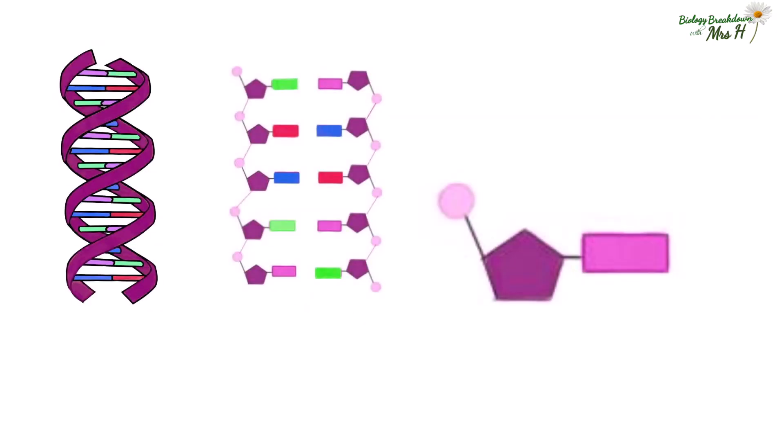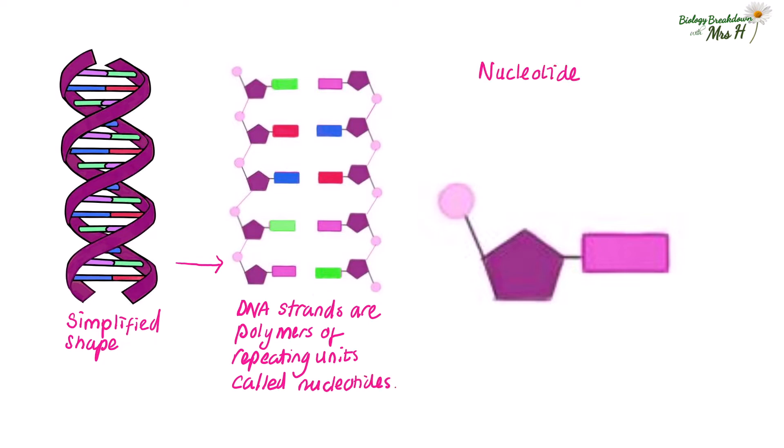Here we can see the simplified version of DNA and the version that shows the individual nucleotides. DNA has two strands and each strand is a polymer of repeating units or monomers called nucleotides. Here is a single nucleotide and it is made up of a phosphate molecule, a sugar and a base.